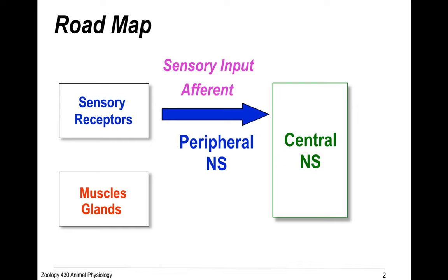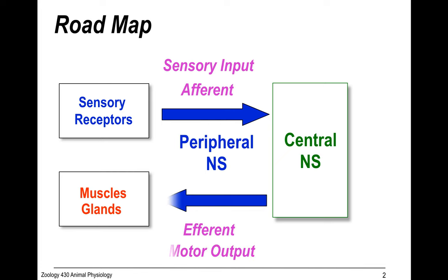The central nervous system then sends information back to the tissues that act upon it, like the muscles and the glands, through the efferent pathways. These are what produce motor outputs.